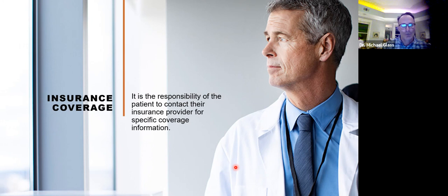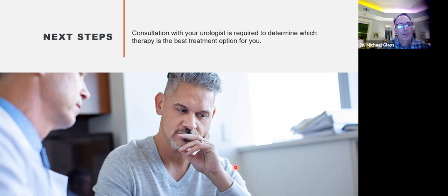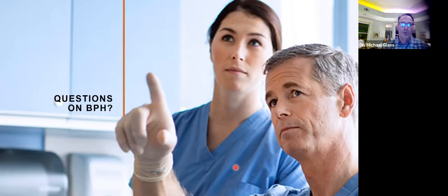In summary: we covered how the prostate works, what BPH is, watchful waiting, first-line therapies including medications, water vapor therapy, and the prostatic urethral lift, as well as laser therapy, TURP, and open prostatectomy. Anytime you're thinking you want something done, see a urologist. No one patient fits any mold — each patient is an individual, and what works for one may not work for another.